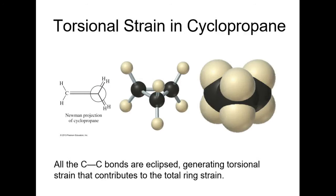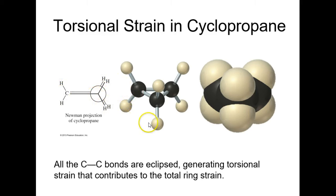You also have torsional strain in cyclopropane because this molecule is permanently eclipsed — you can't rotate around these bonds. So not only do you have eclipsing around the whole molecule, you also have ring strain. We're talking a very high energy molecule. You can form cyclopropane, but it's very high energy.